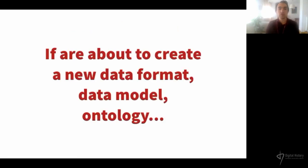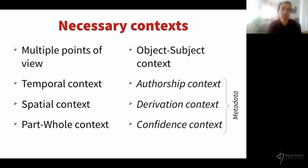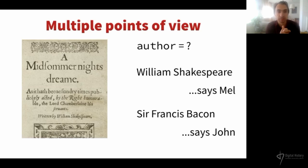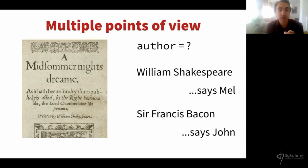These are our recommendations — we call them a knowledge context. They are kinds of pieces of knowledge that every data format should be able to express. We'll go quickly through them with simple examples. First, the multiple point of view: maybe it is a factual thing that A Midsummer Night's Dream was written by William Shakespeare, but this is not actually accepted by everybody. There is a vocal minority that says, for example, Sir Francis Bacon wrote it, and there should be a way for our data to accommodate these two different points of view.